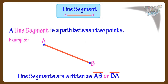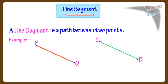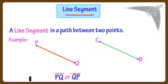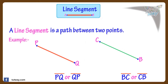Here are some more examples of line segments. This line segment will be written as PQ or QP with a bar above the name — that denotes that it's a line segment. Similarly, this line will be represented as BC or CB, with a bar above to denote it's a line segment.